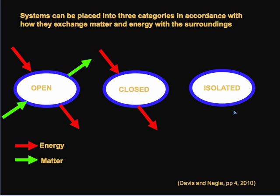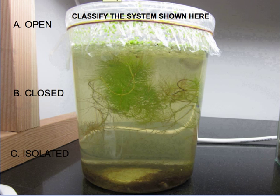We can also have closed systems, which close themselves off from any exchange of matter, but there is still an exchange of energy with the outside. The most common kind of system in environmental systems and societies is the open system, where you have both the exchange of matter and energy — for instance, an ecosystem receiving energy from the sun for photosynthesis and carbon dioxide from the air.